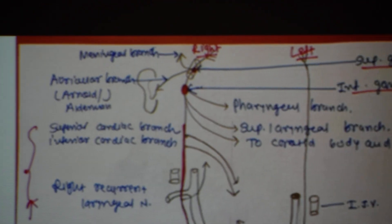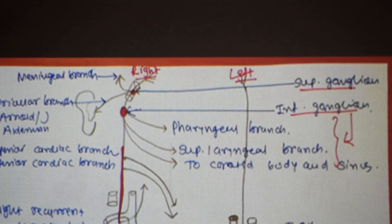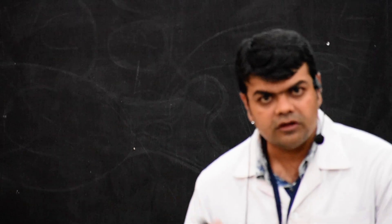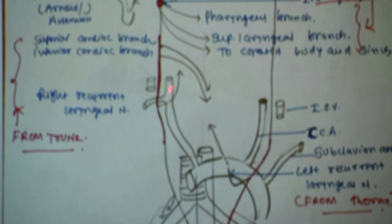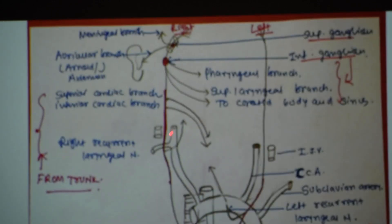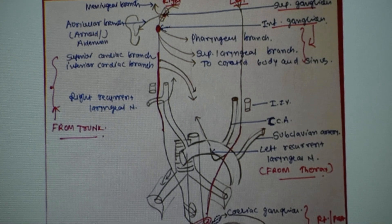Once it comes out through the jugular foramen, it joins with the cranial part of the accessory nerve just below the jugular foramen. Then it passes between the common carotid artery and internal jugular vein, as seen in the contents of the carotid triangle in previous lectures.